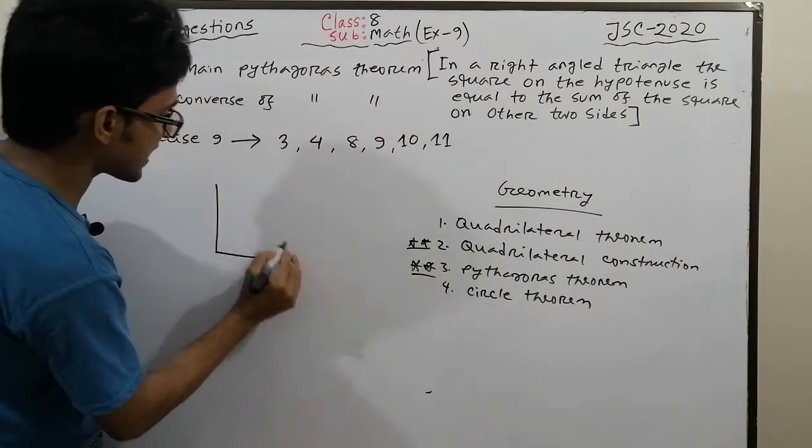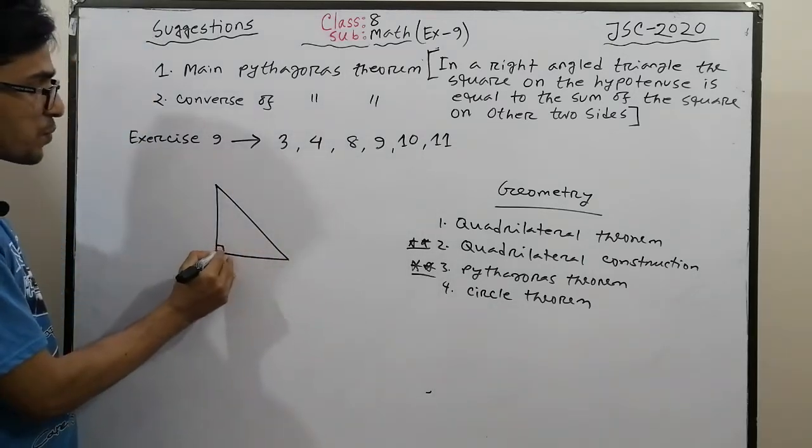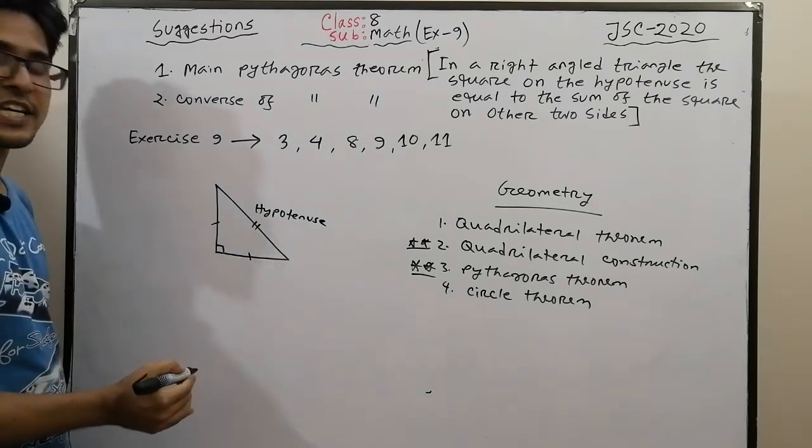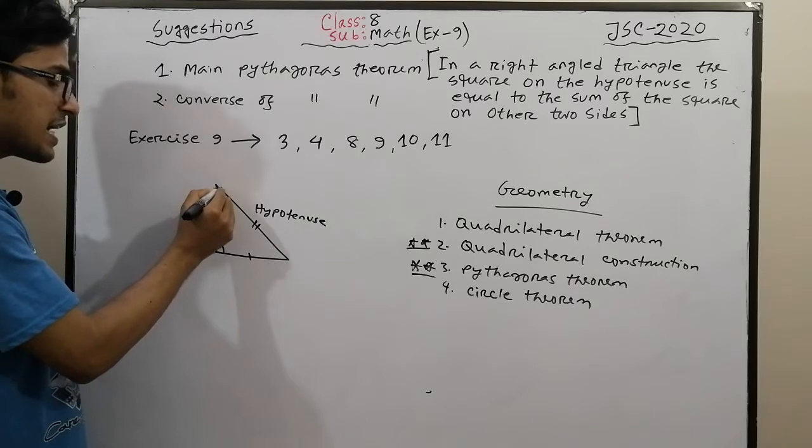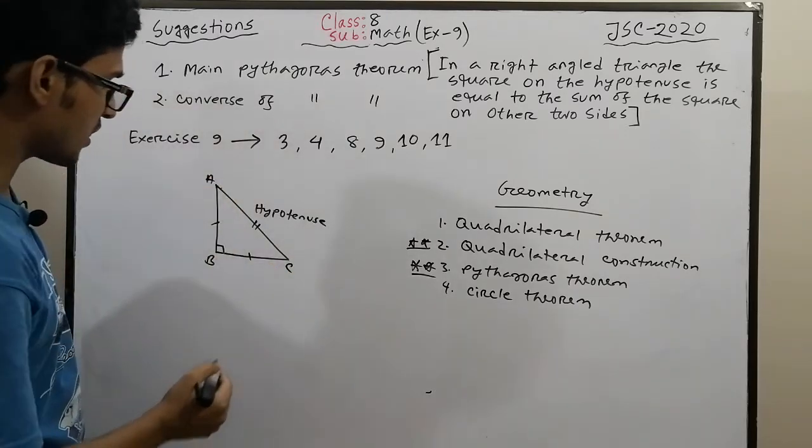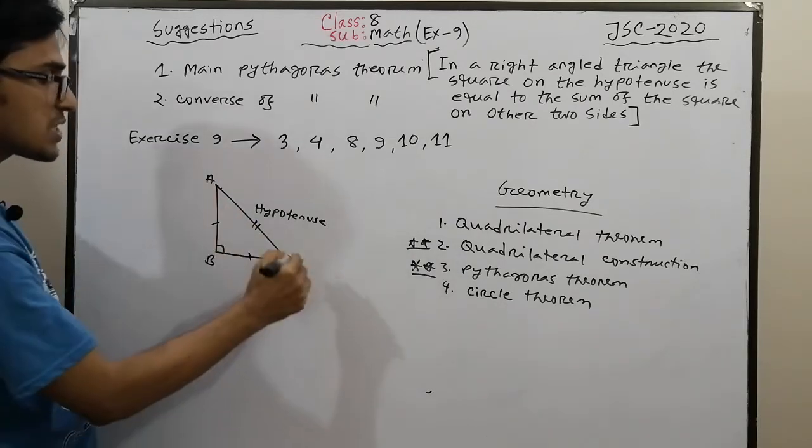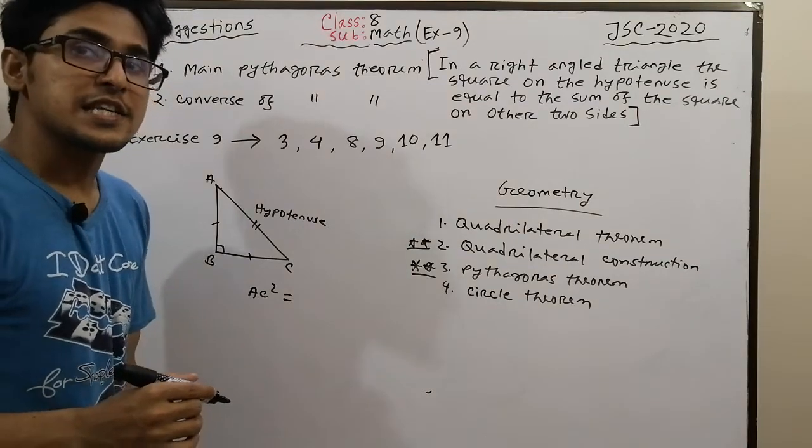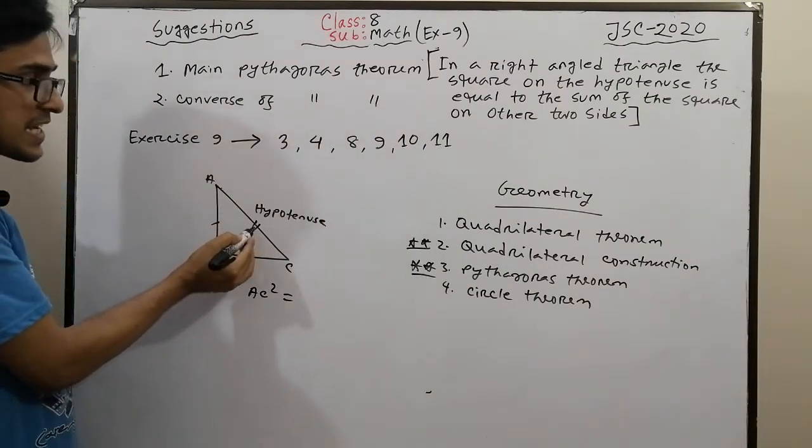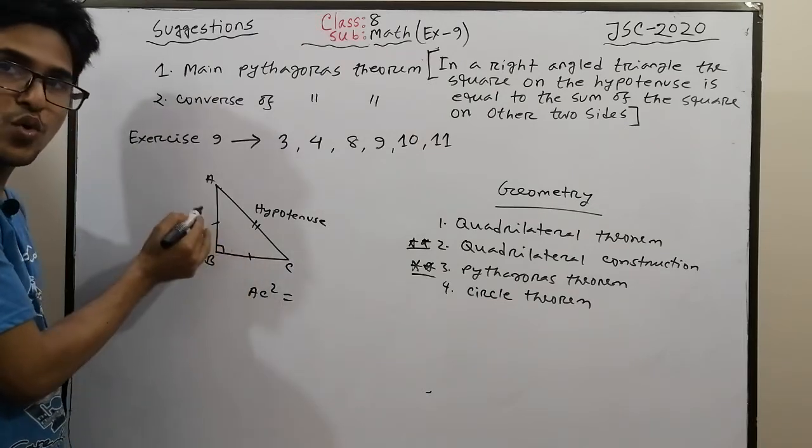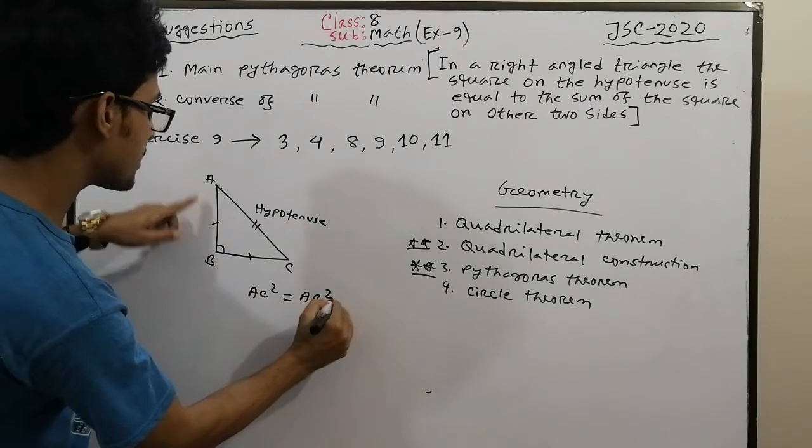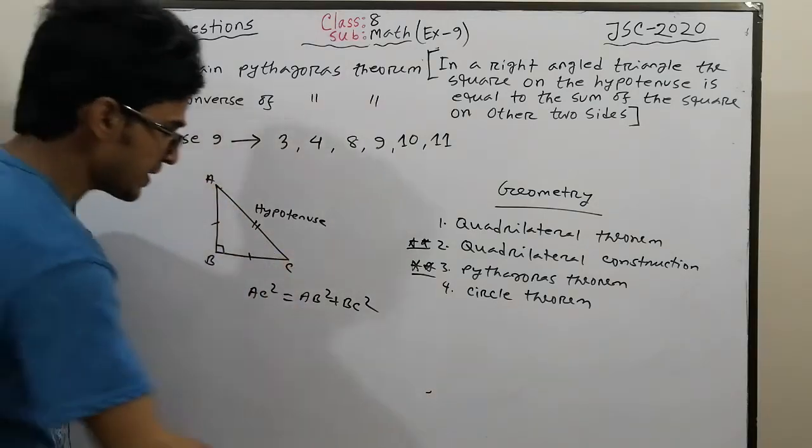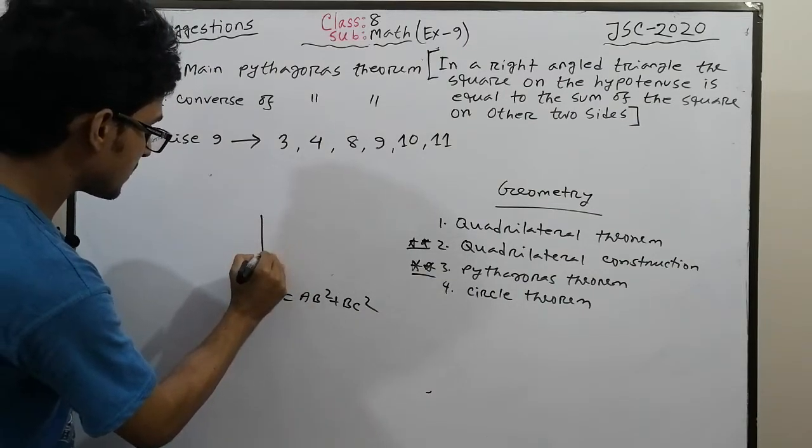In a right-angled triangle, the Pythagorean formula states that in a right-angled triangle, the square of the hypotenuse equals the sum of the squares on the other two sides.